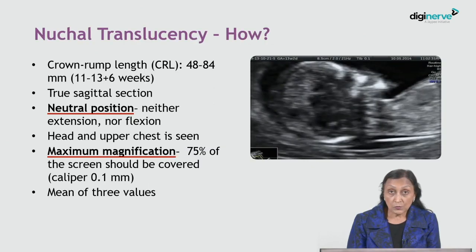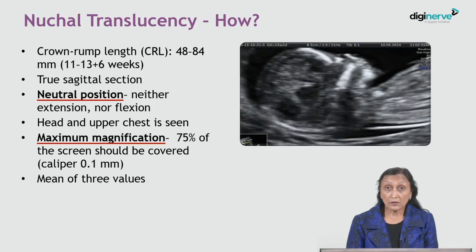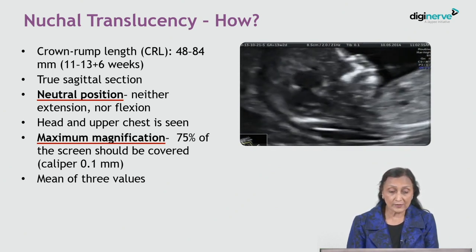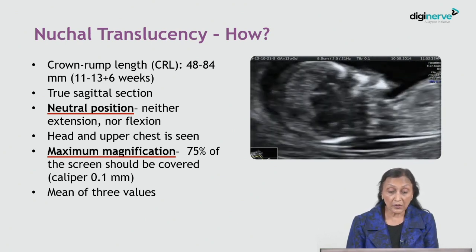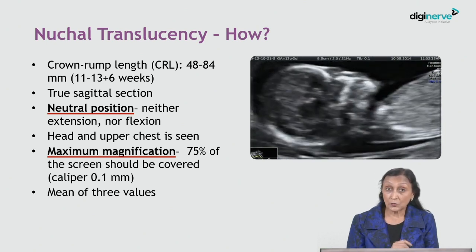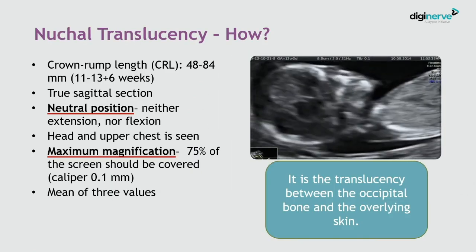Starting with nuchal translucency — what is the correct way of measuring it? It must be measured when the CRL is between 48 to 84 mm. The fetus should be in the true sagittal section in a neutral position, meaning the fetal head should be neither extended nor flexed. The head and upper chest are the only parts that should be seen, covering almost the entire image. Magnification should be maximum — 75% of the screen should be covered. The minimum caliper increment should be 0.1 mm, and you must take three different values of nuchal translucency and calculate their mean.